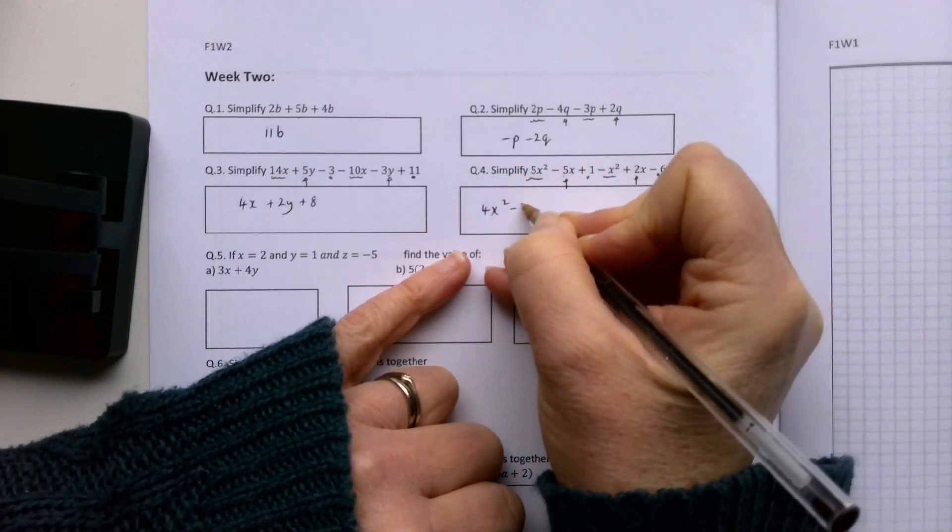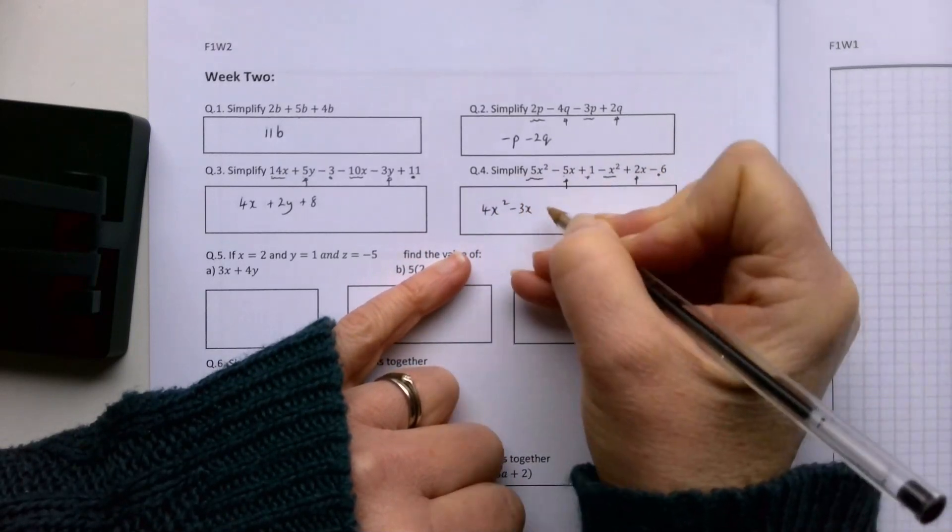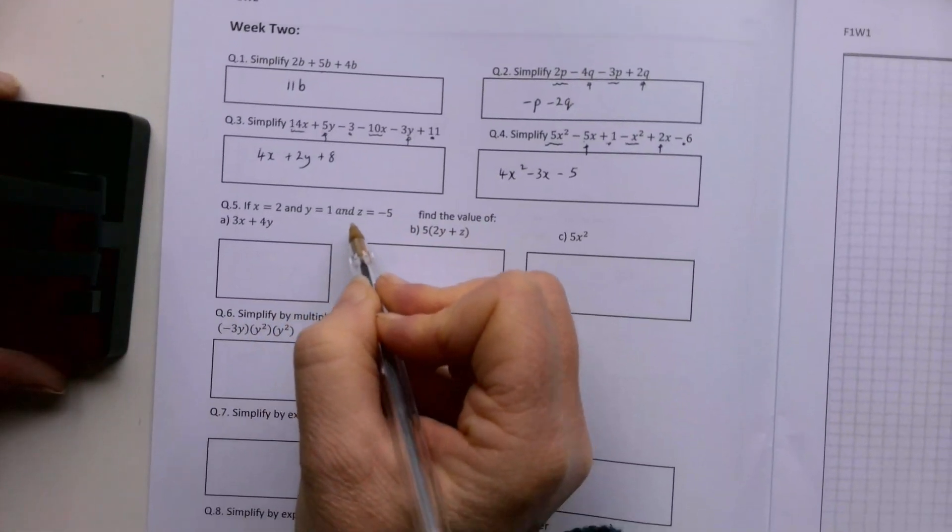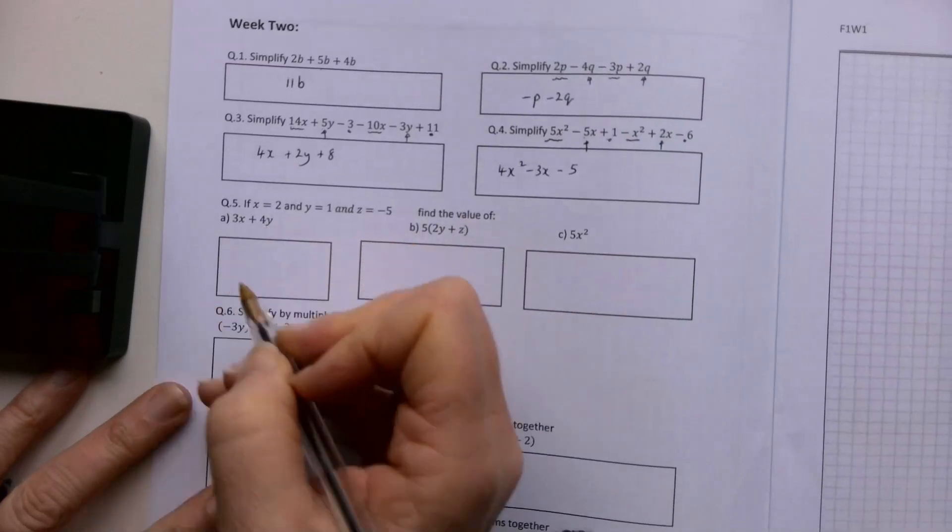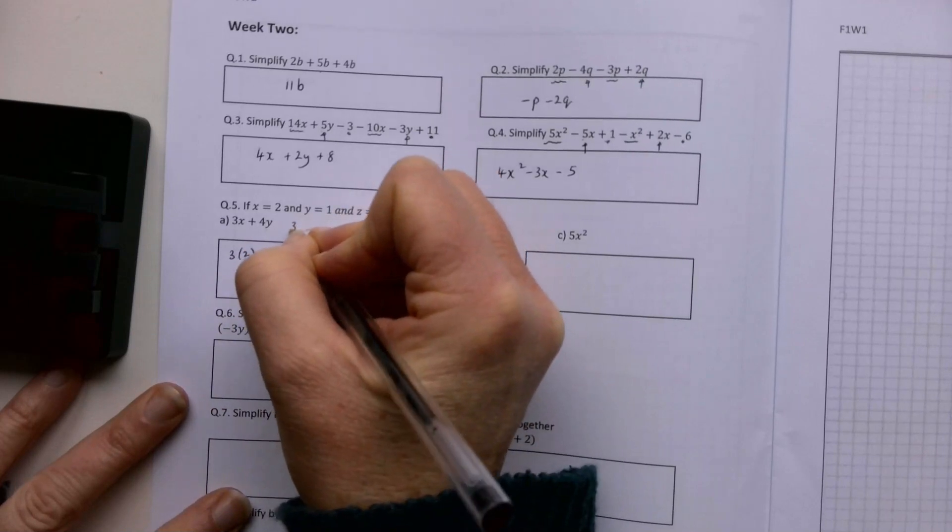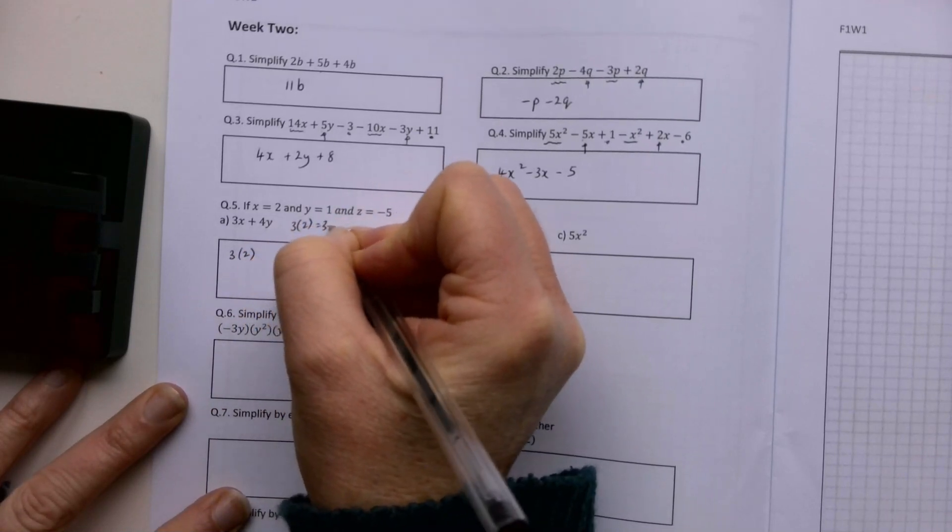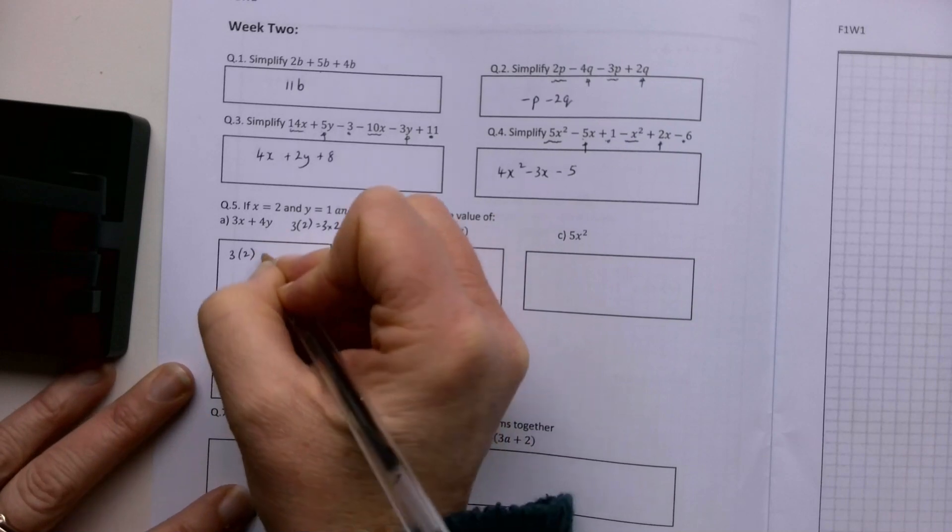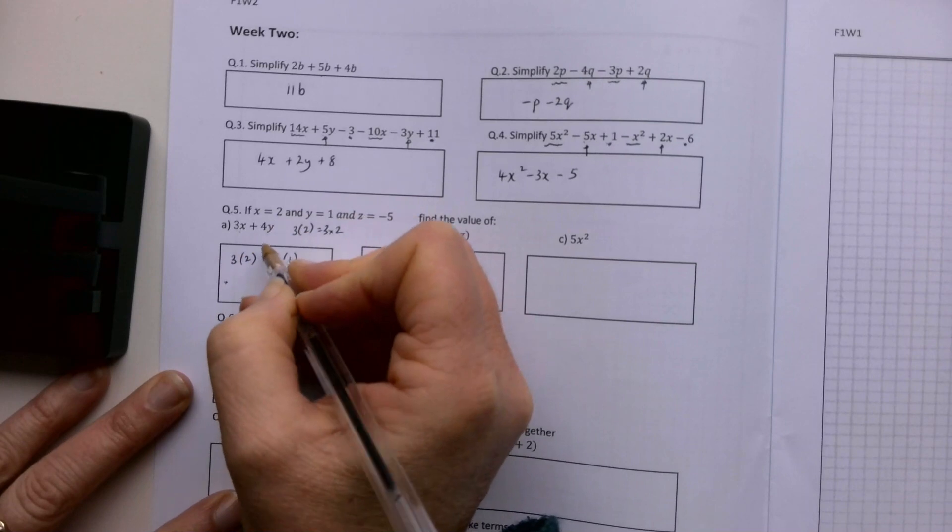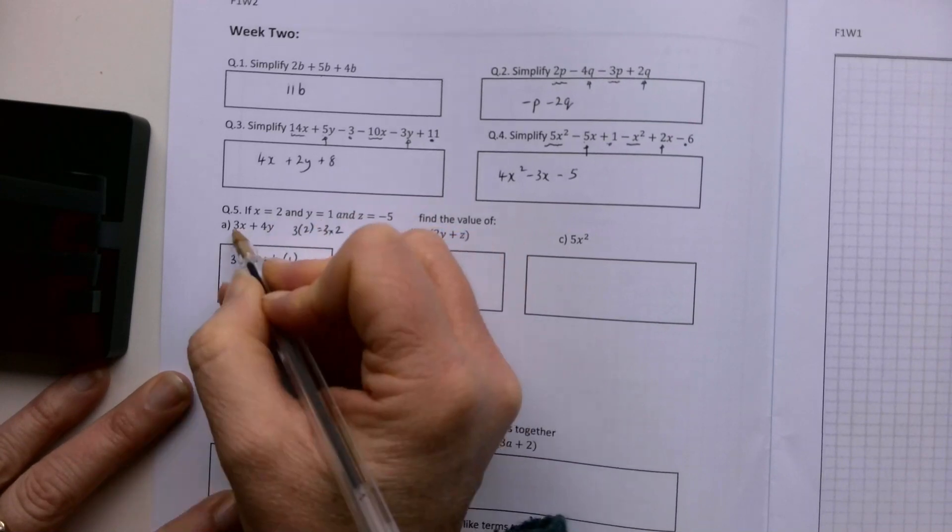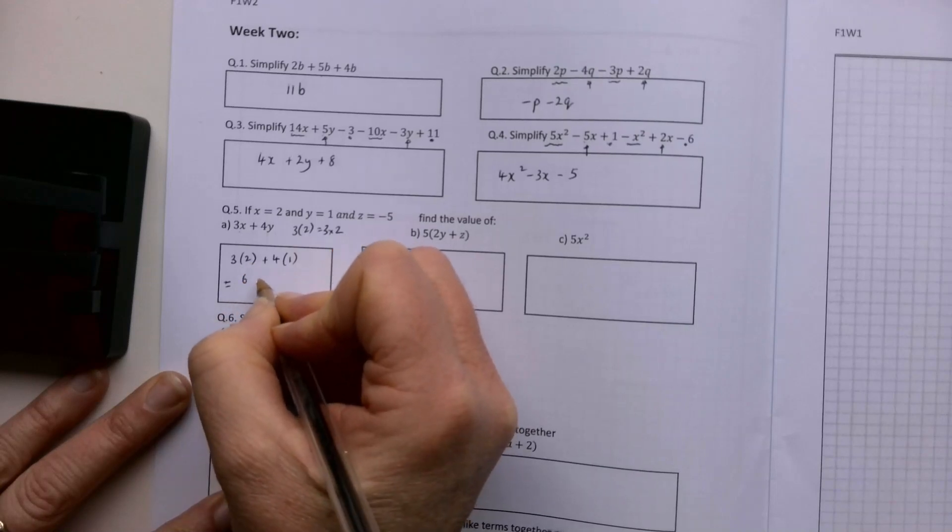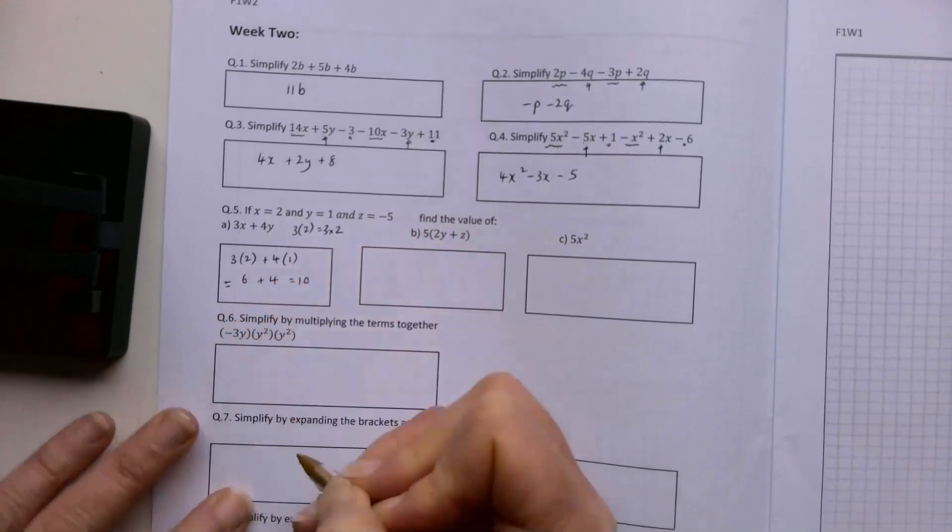If x equals 2, y equals 1, and z equals minus 5, find the value of 3x plus 4y. So 3x plus 4y is 3 times 2 - when I write 3 by 2 like that, I mean 3 times 2 - plus 4 by 1. Wherever I had an x I put 2, wherever I had a y I put 1. 3x means 3 multiplied by x, so 3 by 2 is 6, 4 by 1 is 4. That's 6 plus 4, which is 10.